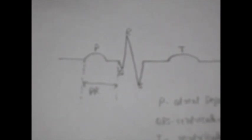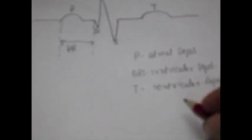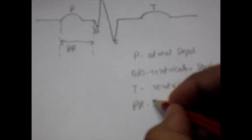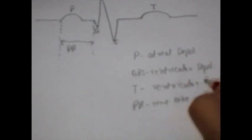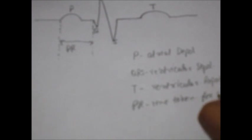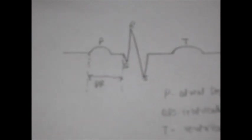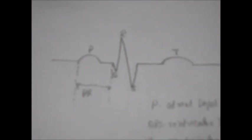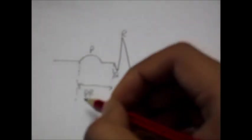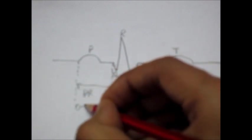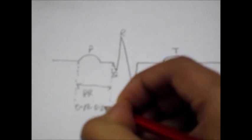What does the PR interval signify? The PR interval signifies the time taken by the wave of depolarization, or the depolarization wave, to reach the ventricle. The time taken for depolarization wave to reach ventricle. The usual duration of this wave is 0.12 to 0.20 seconds.